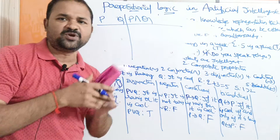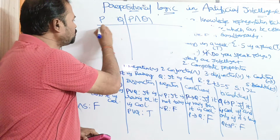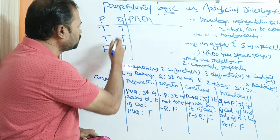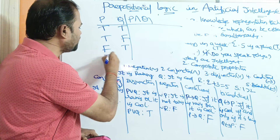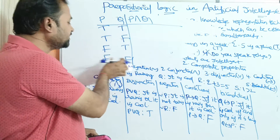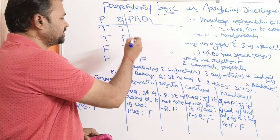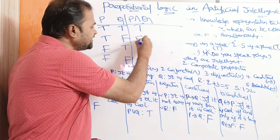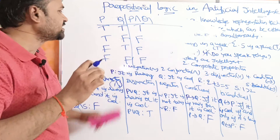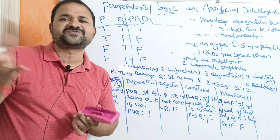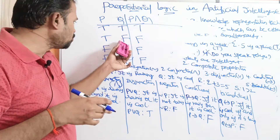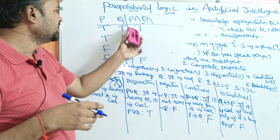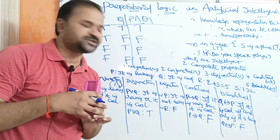For the conjunction truth table, with two propositions we have four possible combinations. P ∧ Q is true only when both P and Q are true; otherwise the result is false. So if one of the propositions is false, the conjunction returns false. Only when both are true does it return true.